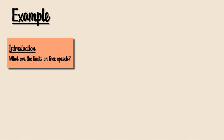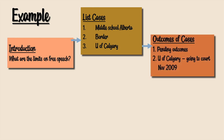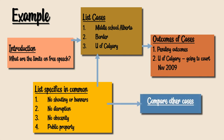Let's take a look at an example of how to map your ideas. In your introduction, you would use a question: 'What are the limits on free speech?' You can start by listing the cases — number one: middle school in Alberta; number two: border; number three: University of Calgary. Then write the outcomes of cases, including pending outcomes such as the University of Calgary going to court November 2009. Next, list specifics in common: no shouting or banners, no disruption, no obscenity, public property. Then compare other cases. Begin by writing the common factors in the cases because they would be the core of your paper, and build the rest of the paper around these four factors.